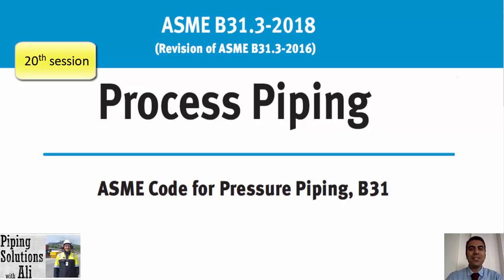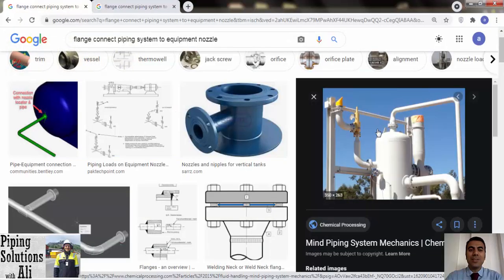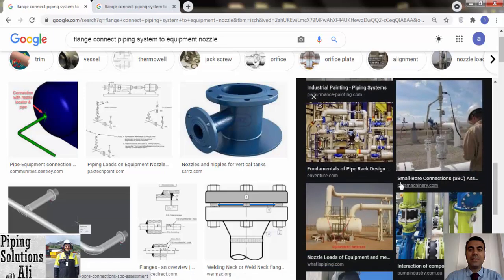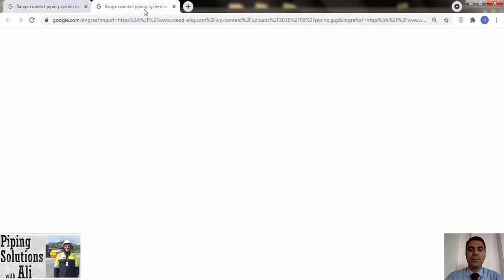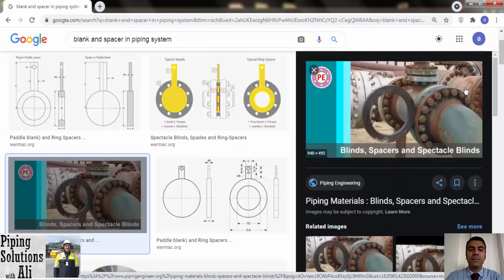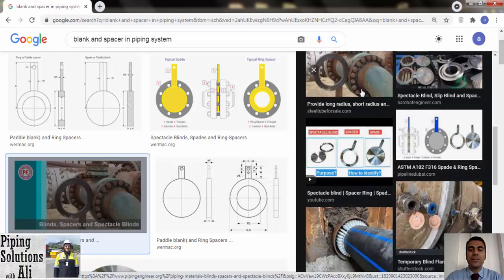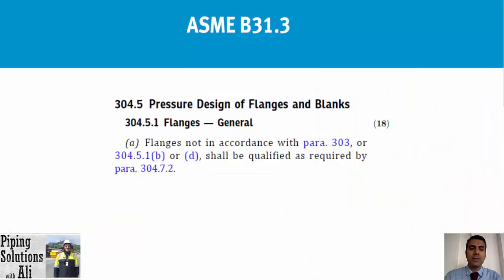Hello and welcome to the 20th session of the ASME B31.3 course. This is Ali, and I hope you are doing well. In this episode I'm going to talk about the pressure design of flanges and blanks. Flanges are used to connect piping systems to nozzles, to provide means for maintenance, and to connect pipes to flange-type components such as flanged valves. The purpose of using a blank is to provide the means to block off the flow of liquid through a piping system.